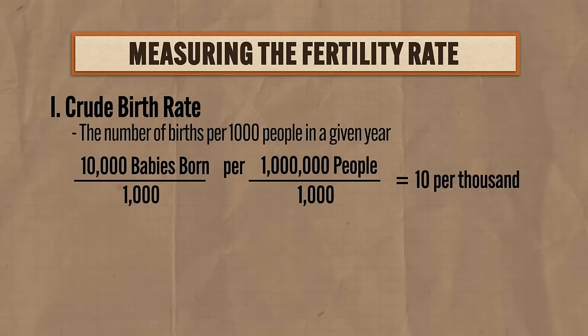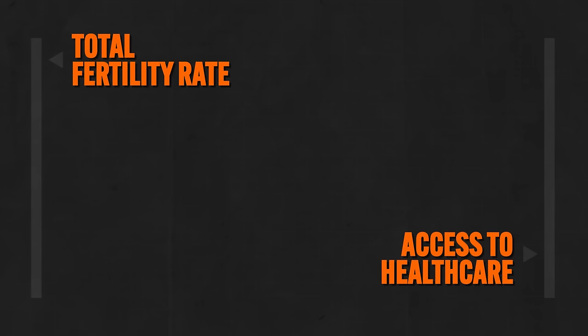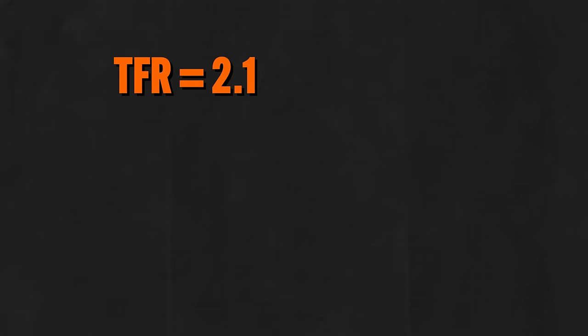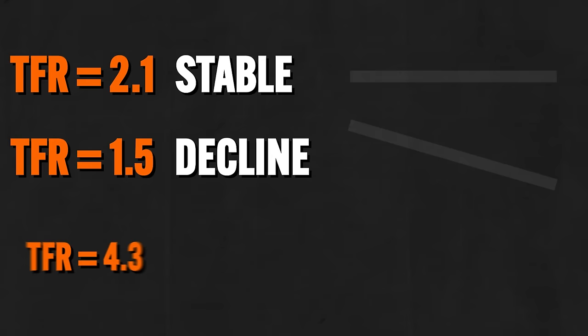A potentially more accurate measure is the total fertility rate (TFR), which indicates the average number of children one woman will have during her childbearing years, roughly age 15 to 49. This is more accurate than crude birth rate because it only considers the portion of the population capable of bearing children. A country's TFR is often a signal of its access to healthcare and family planning services. A TFR of 2.1 is the rate at which a population will remain stable. Europe's TFR as of 2020 was about 1.5 — population decline — while Africa's was 4.3 — population growth.